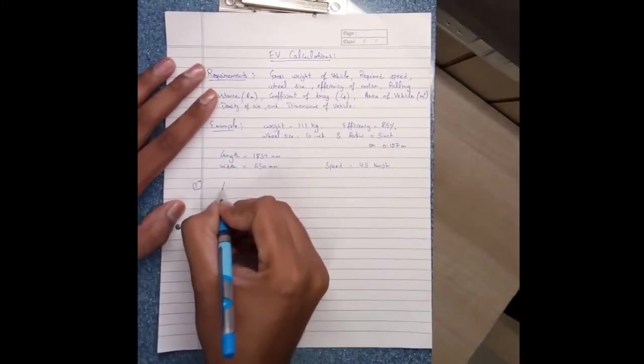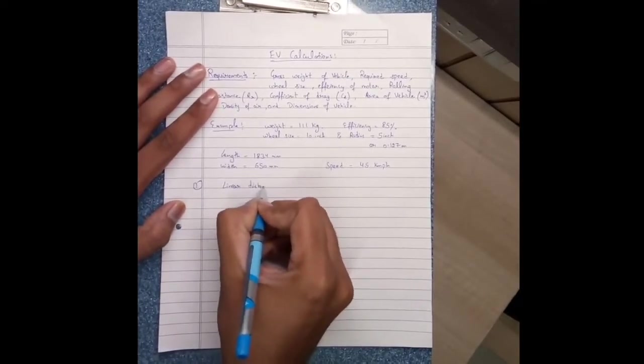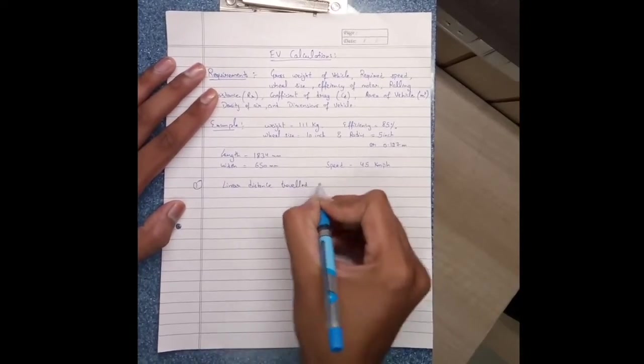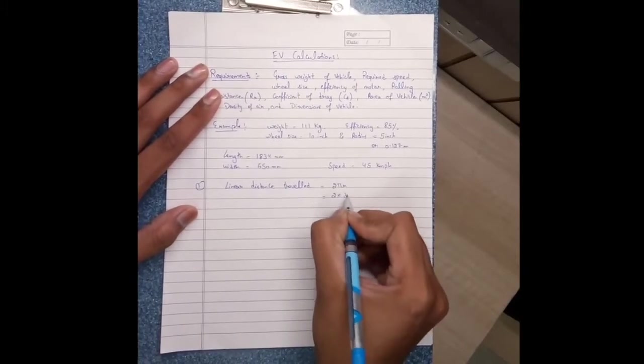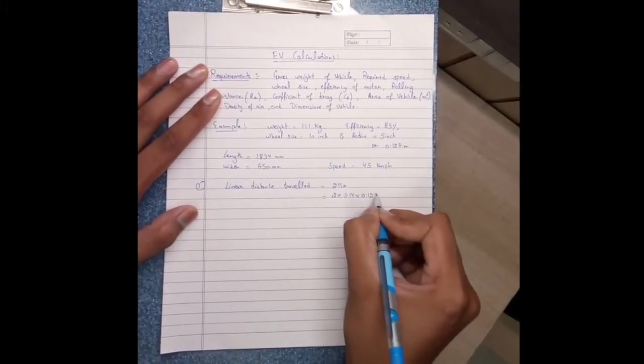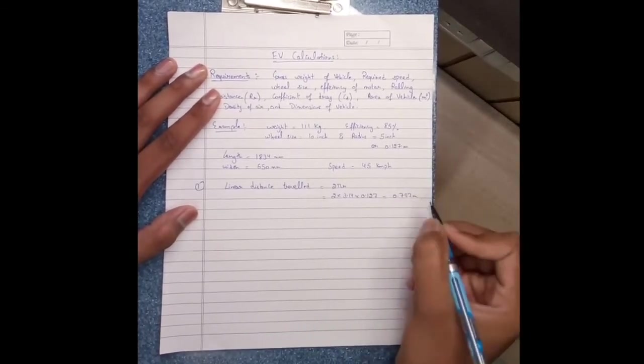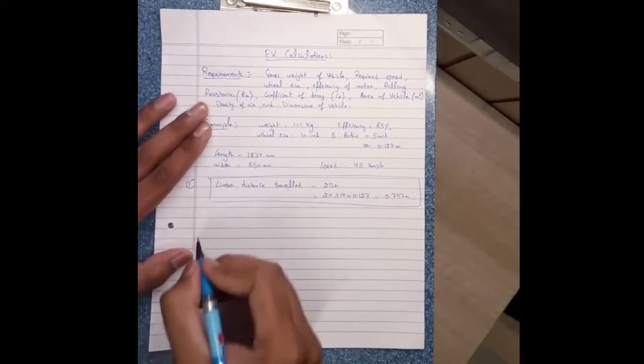Firstly, we calculate linear distance traveled, which equals to 2πr: going to 3.14 times 0.127 equals 0.797 meters. So linear distance traveled comes to 0.797 meters.